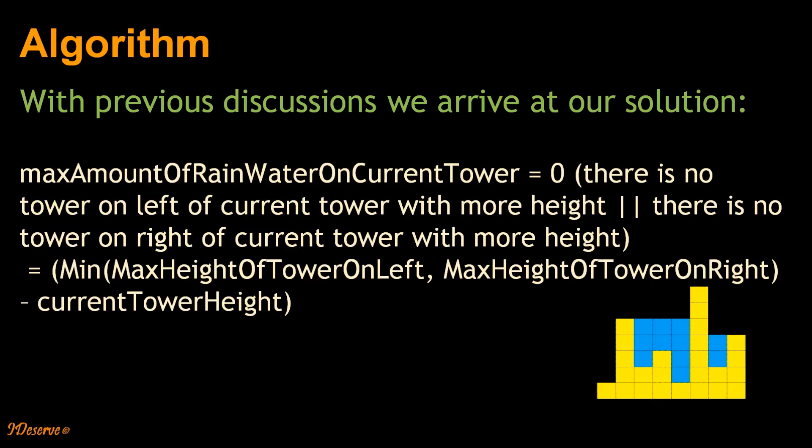So with previous discussions, we arrived at our solution. Maximum amount of rain water on current tower has two values. First is 0 when there is no tower on left of current tower with more height or there is no tower on right of current tower with more height. Or it is minimum of maximum height of tower on left and maximum height of tower on right, minus current tower height.